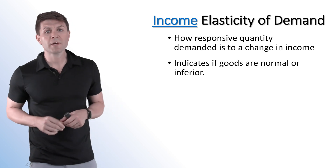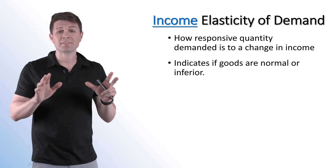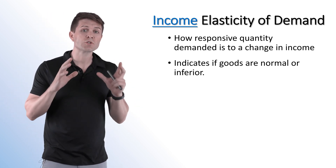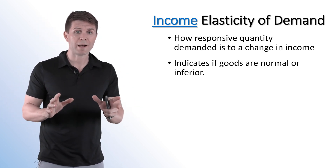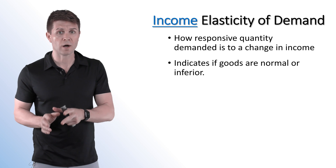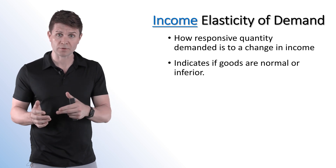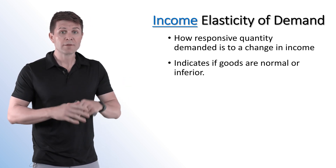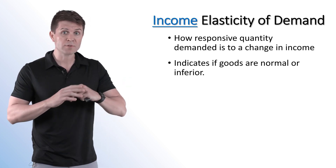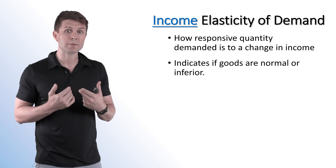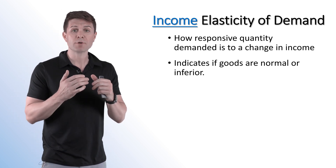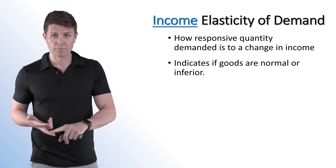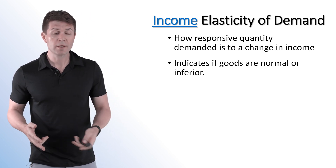First, let's look at income elasticity of demand. This one shows how responsive consumers are to changes in their income — increases and decreases. From these coefficients, we're going to be able to tell if a good is a normal or an inferior good.